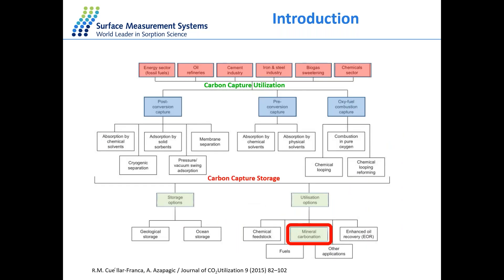There are several sources of carbon dioxide shown on the slides here: the energy sector, combustion of fossil fuels, oil refineries, cement industry, and iron industry. There are two main capture methods — carbon capture utilization and carbon capture storage — to reduce CO2 in the atmosphere. Today, we are going to focus mainly on carbon capture storage, and particularly on mineral carbonation, which is very important.